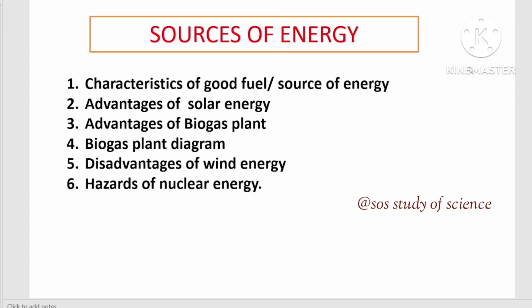Next, last lesson, sources of energy. Main thing is advantages, disadvantages. First one characteristics of good fuel, good source of energy. Next one advantages of solar energy. Particularly solar cell. A solar cell advantage, disadvantage. In advantages of biogas plant, biogas plant, what are the main fuel obtained from the biogas plant, that is methane. Methane, constituents. Biogas plant, diagram. In disadvantages of wind energy. Where wind speed is minimum, disadvantages.